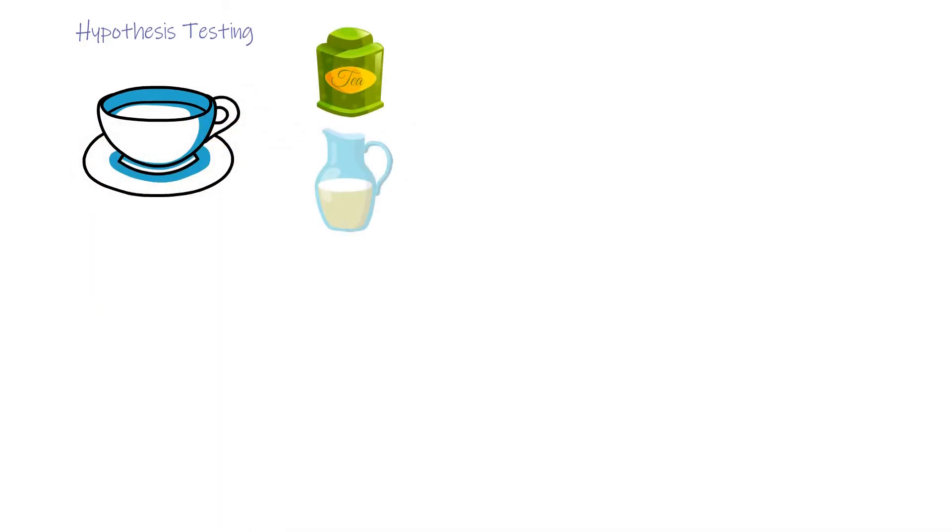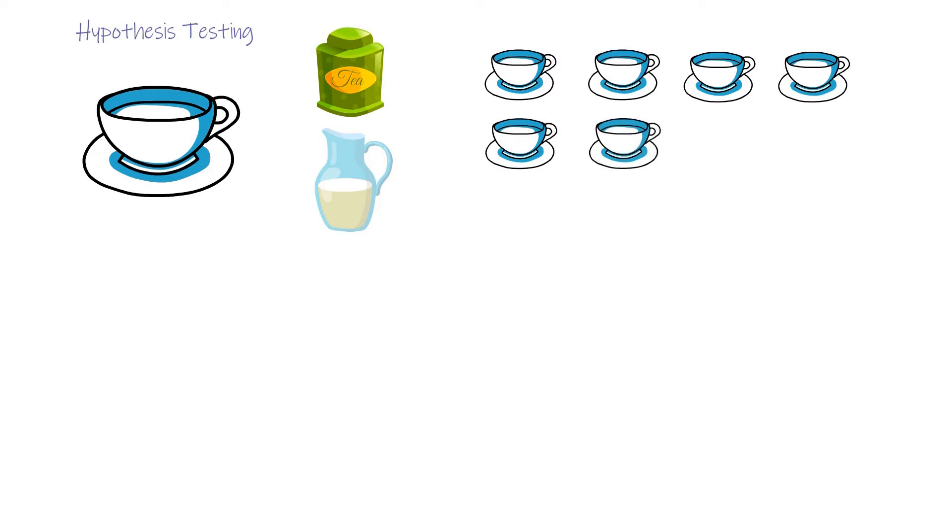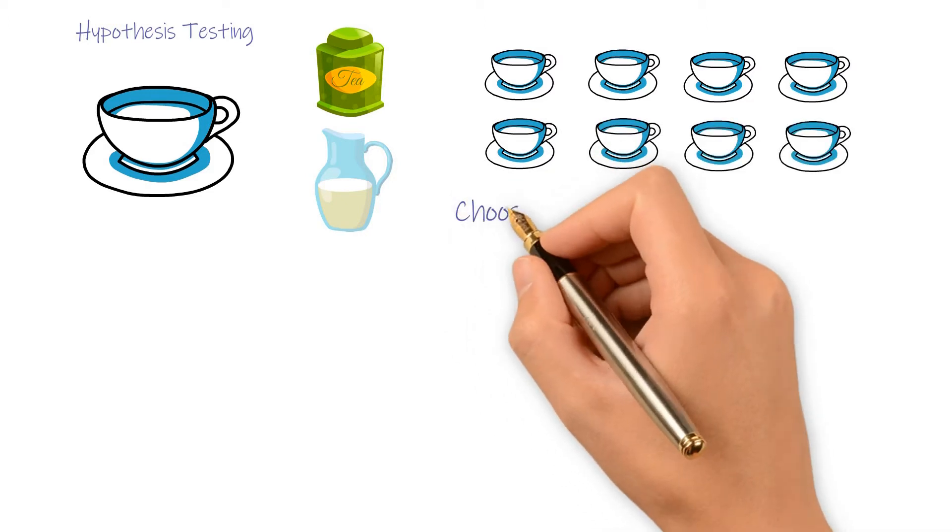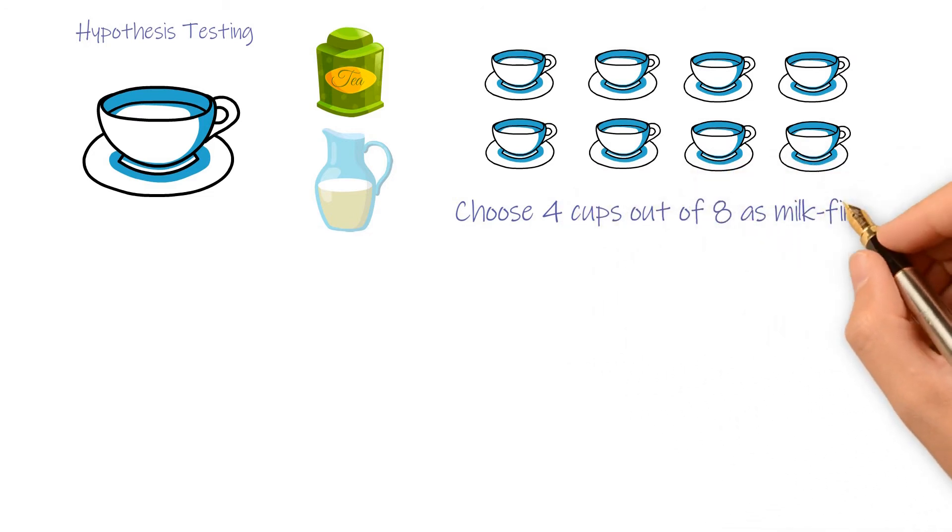To find out whether it is true, she was given 8 cups of tea, 4 of which held milk first, and 4 of which had milk added after the tea. Then she will choose 4 cups out of 8 as milk first.